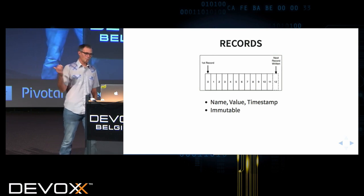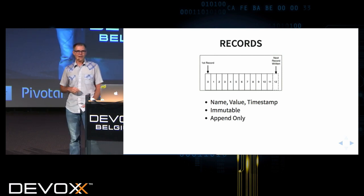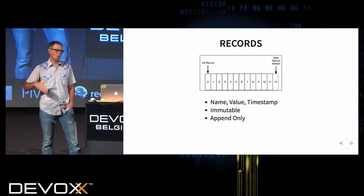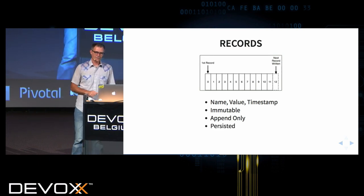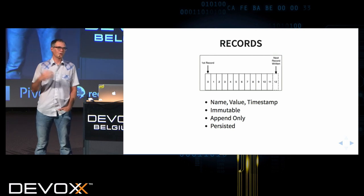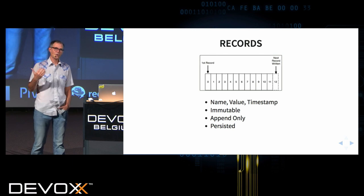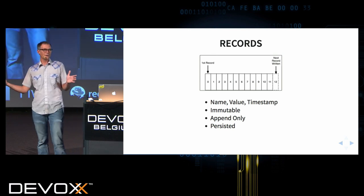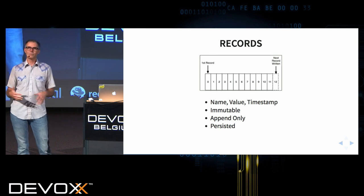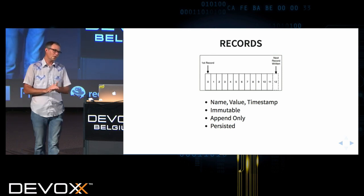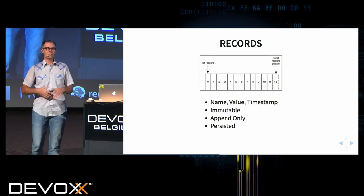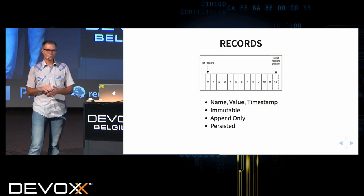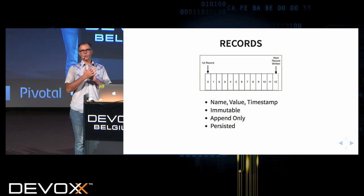Records are immutable — they can only be written to, not overwritten — and they're append-only. When sending records into Kafka, you're only appending to the system; there is no update process. Records are persisted across the cluster and also persisted to disk, so you won't lose them. There are different settings for how long you keep messages — most people don't keep them forever. Typically you'll have a one-week or one-month window for durability. If you need forever durability, you'll use a data pipeline to take records and push them into Cassandra or another data store.